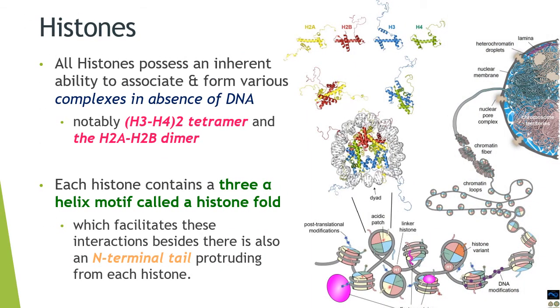Histones interact with each other to form an octamer of H2A, H2B, H3, and H4. Histones have an inherent capacity to form complexes in the absence of DNA as well. They can make a tetramer like the H3-H4 tetramer or H2A-H2B dimer. Each histone contains a three-helix motif called the histone fold, which facilitates the interaction with each other.